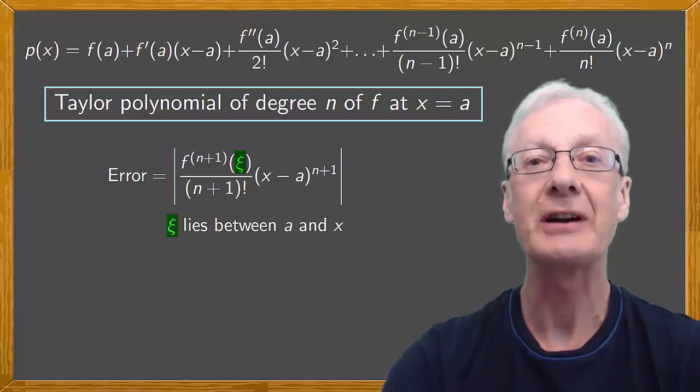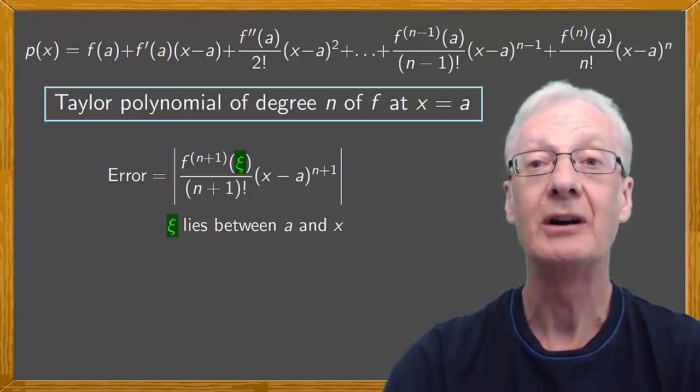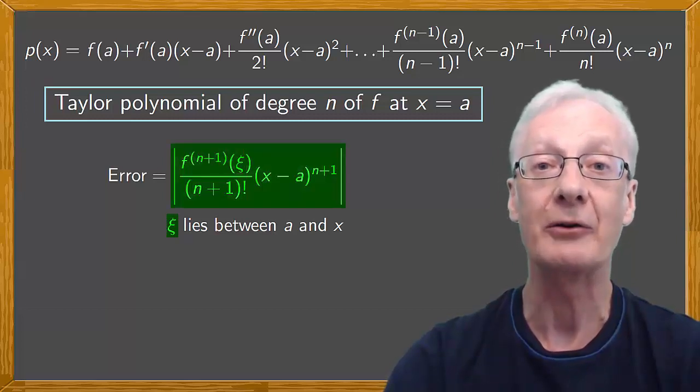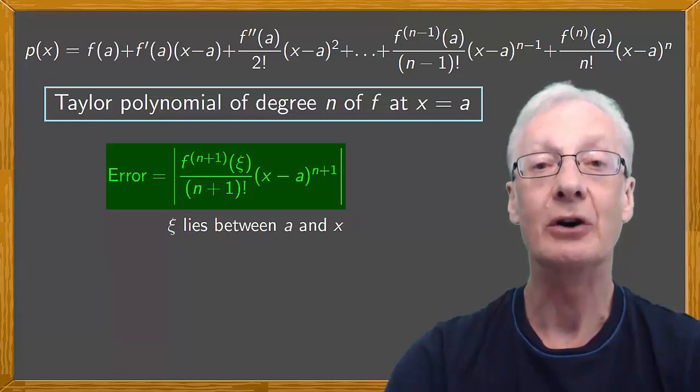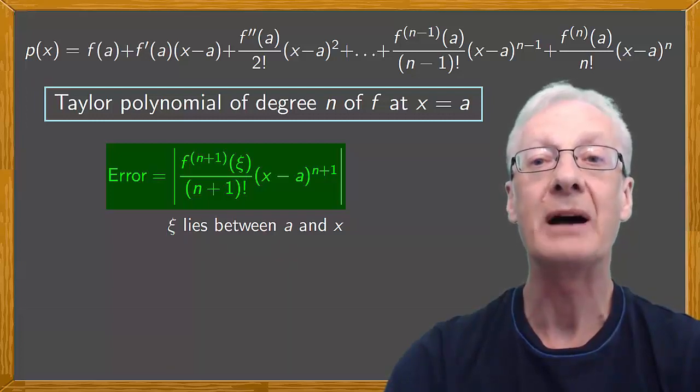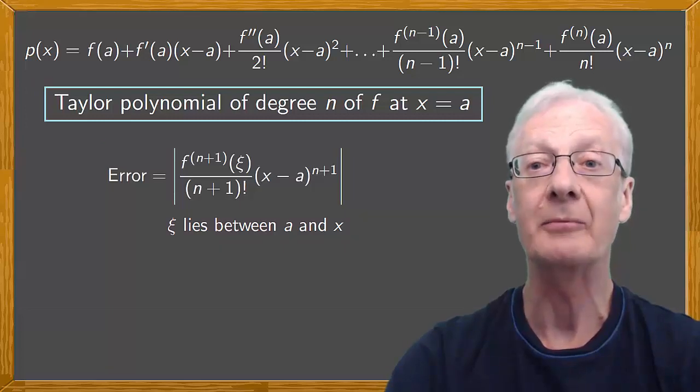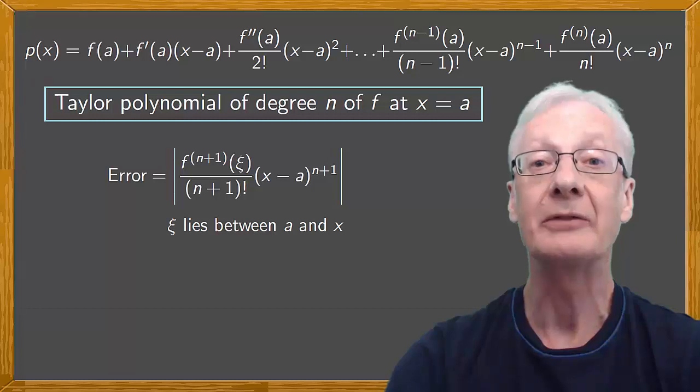Of course, this psi value isn't precisely known, otherwise we'd know the exact error, and from there we could get the exact value. So psi isn't known, and neither is the error. But what we can do is limit the error, to make the error bound as small as possible. We could figure out the error bound in our example, it isn't hard to do, but it would make our video a little long, so we'll leave that for another day.